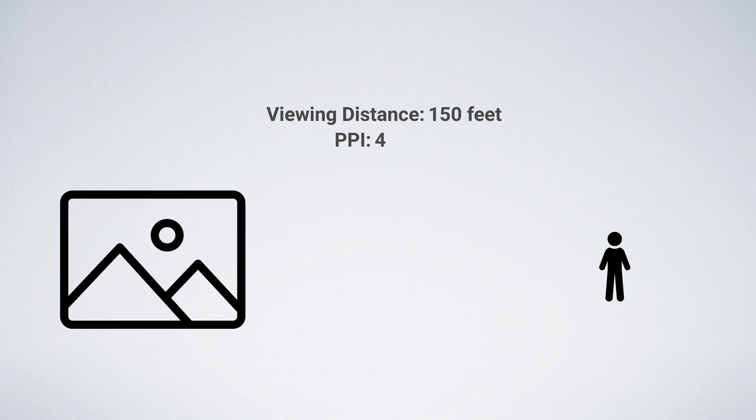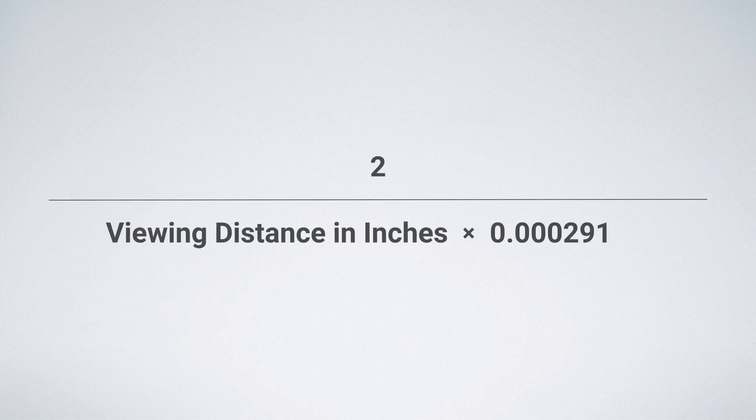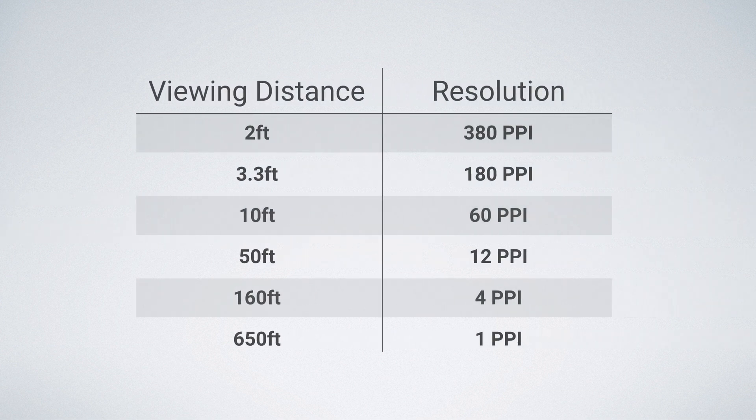There's actually a formula for calculating how many pixels per inch you need for your image to look sharp at a given distance. Using this formula, you can see that at 150 feet you only need a PPI of 4 for your image to look sharp.